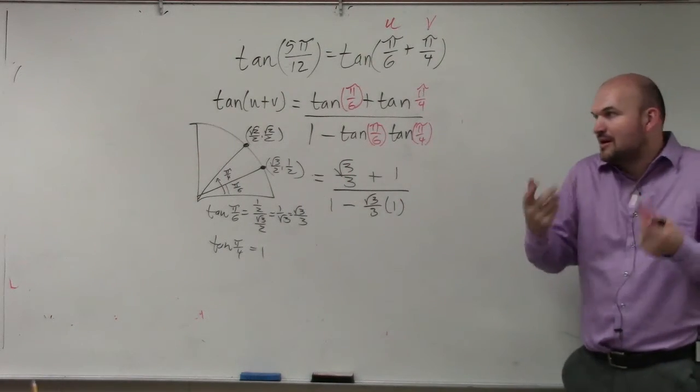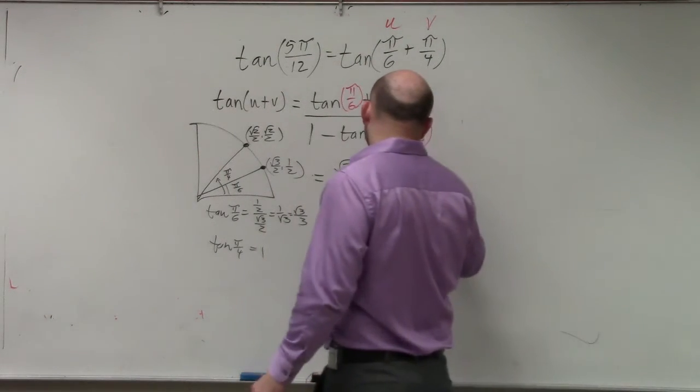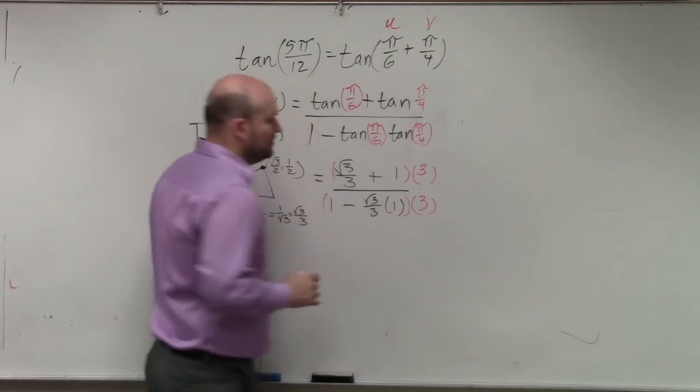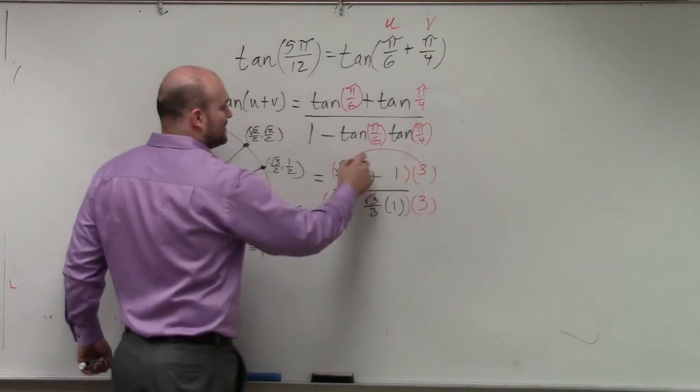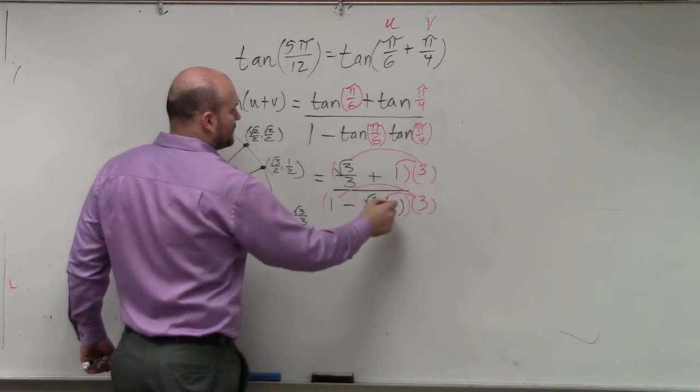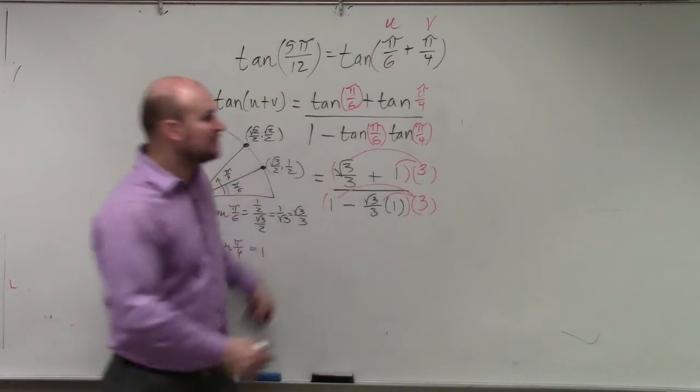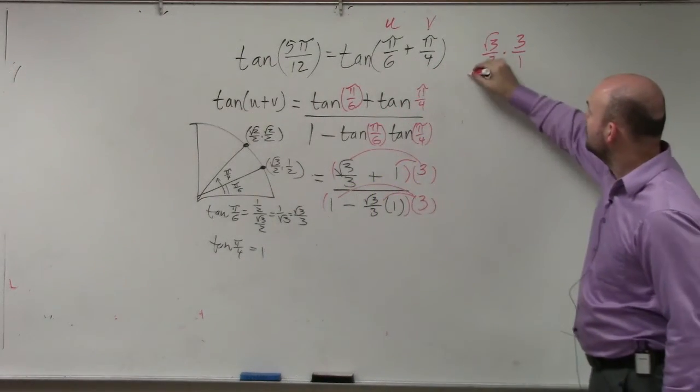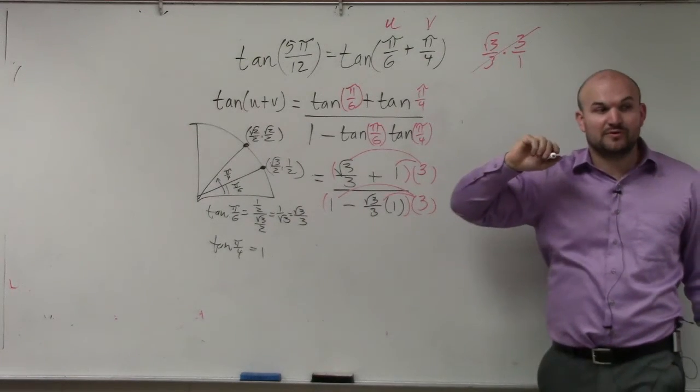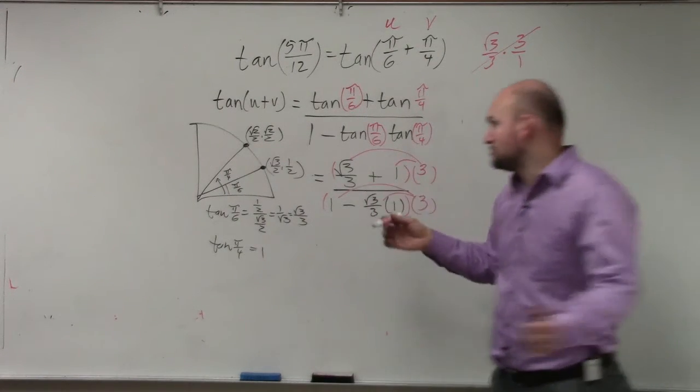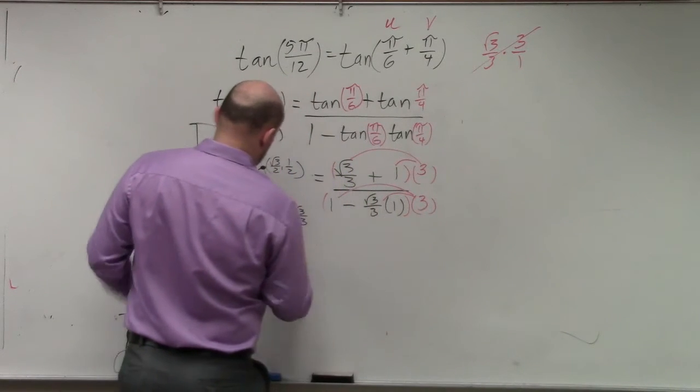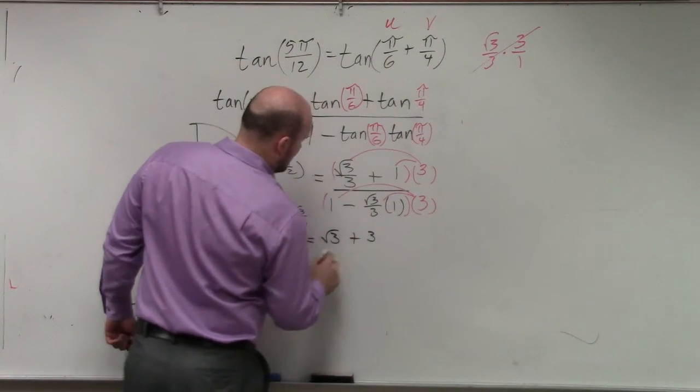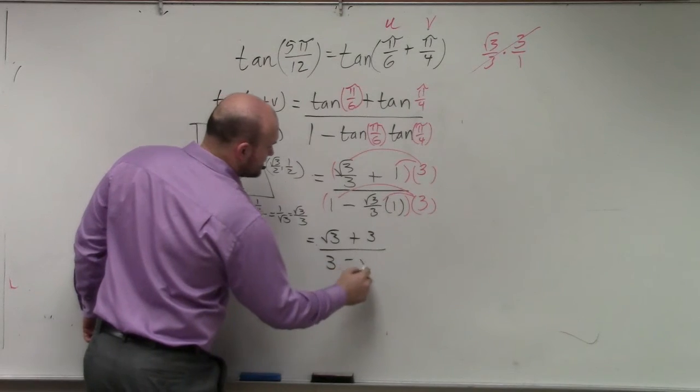My best advice would be to multiply by 3 over 3. When you multiply by 3 over 3, you have to apply a distributive property. I have to multiply a 3 over here and a 3 over here. So what's 3 times square root of 3 over 3? That's really 3 over 1. The square root of 3 over 1, which is just the square root of 3. And then 3 times 1 is 3 over 3 times 1 is 3 minus the square root of 3. Does everybody see that?